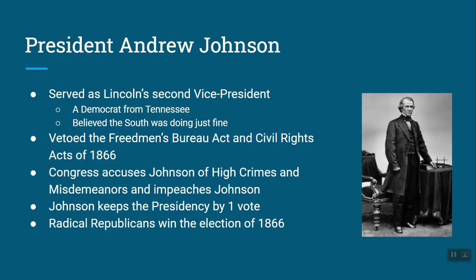Then there was President Andrew Johnson. A couple of things about him: first, he was not a Republican — he was a Democrat. Lincoln's second term was not a Republican ticket but a joint ticket between a Republican and a Democrat to try to bring the country together. When Johnson became president after Lincoln was shot in April 1865, he was very strongly supportive of the South and thought the South was doing just fine. In 1866, when the Freedmen's Bureau Act was passed, he vetoed it, and when the Civil Rights Act was passed, he vetoed that as well.